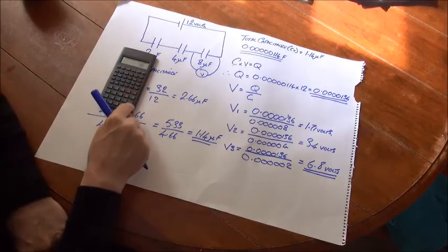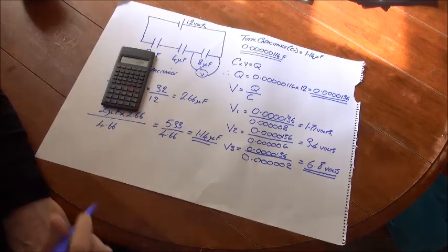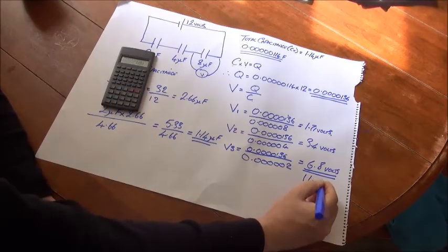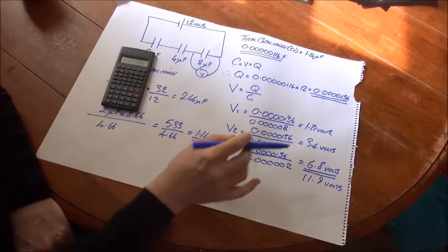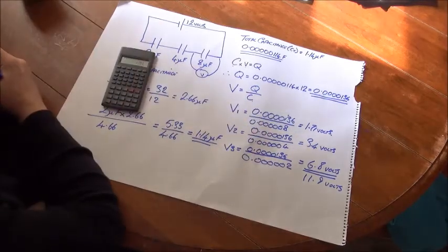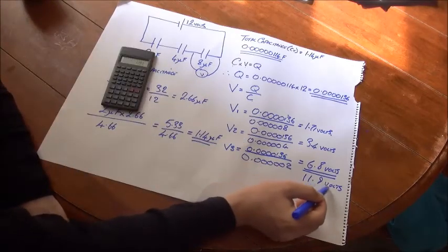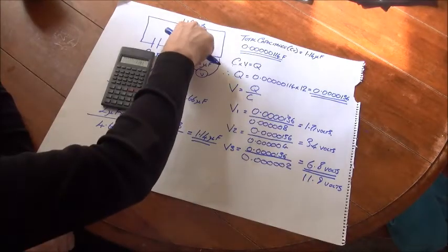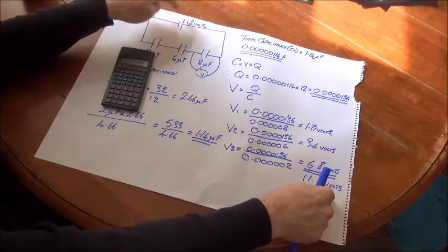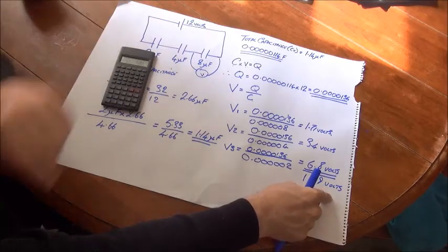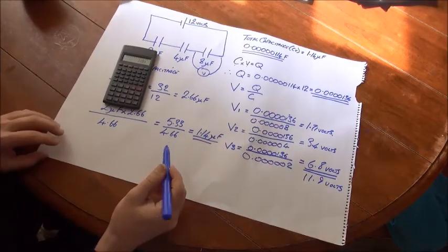If we add those volt drops up, we come to approximately, in this case, 11.9 volts. I have rounded things up a bit and up and down a bit. If you went to, say, six or seven significant places, you would find that the voltage drop here will equal the applied voltage. There's your check. This has to be close to the applied voltage if you've done it correctly. If you're more than a couple of volts out, you've definitely done it wrong and you need to check your working.